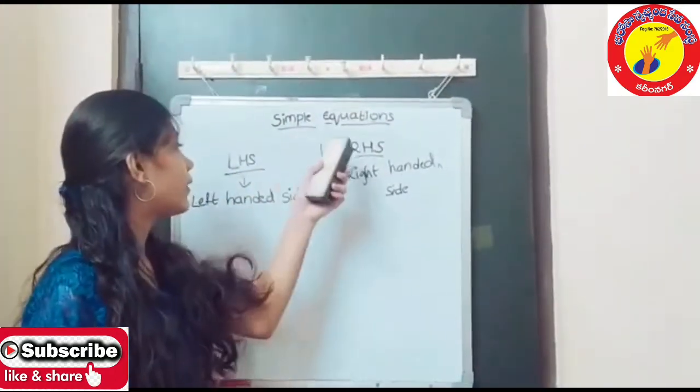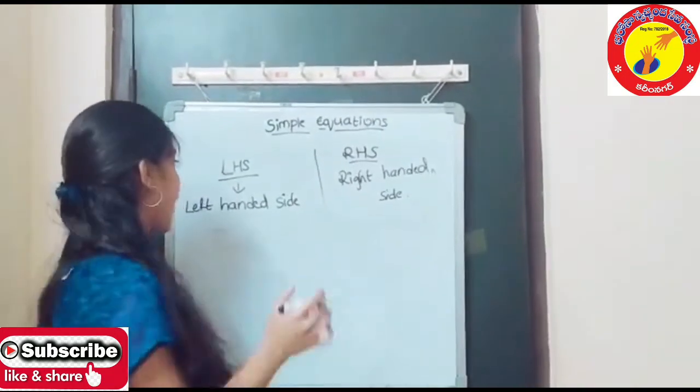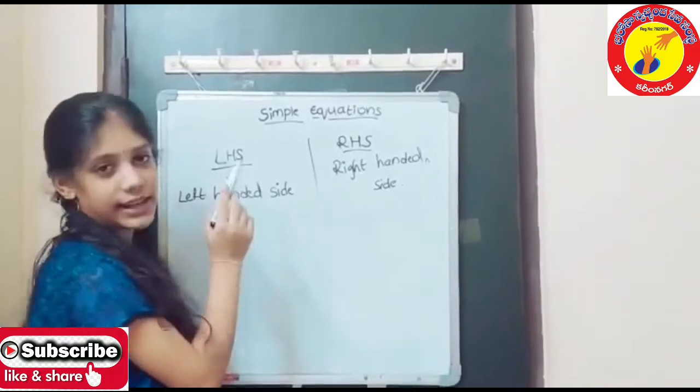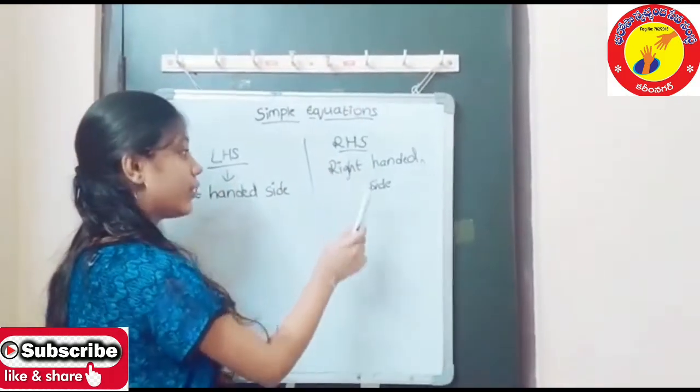In these simple equations, the main parts are LHS and RHS. LHS stands for left-handed side and RHS stands for right-handed side.